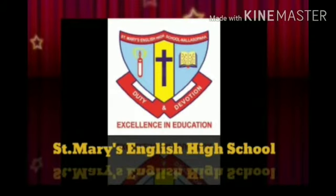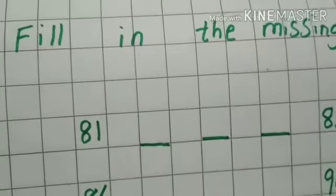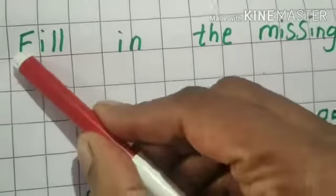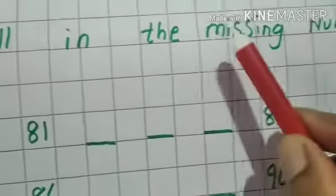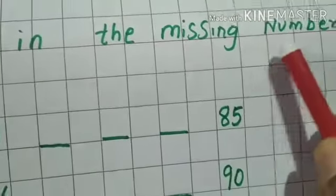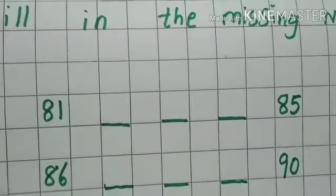Welcome children. Junior KG Maths — fill in the missing numbers. Fill in the missing numbers from 81 to 100.